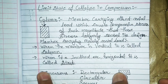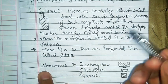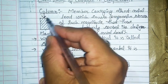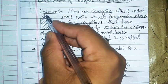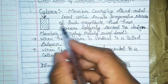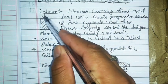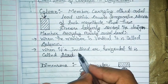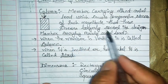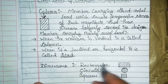Here we are going to take the limit state of collapse. A column is a compression member that mainly carries direct axial loading. The member drawn here is carrying mainly axial loading. When a member is vertical and carries axial load it is termed as a column. If the member is horizontal or inclined and carries axial loads, it is termed as a strut. Regarding dimensions, the column can be rectangular, circular, or square depending upon requirements.